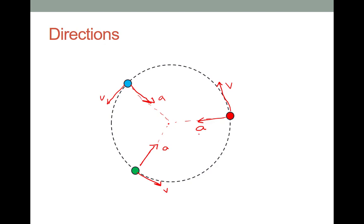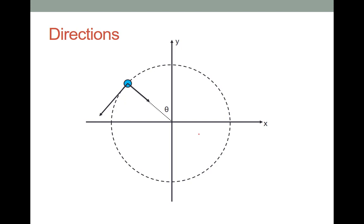If we focus on the blue object, we can define the angle that it's rotated through. Here I've defined it relative to the positive y-axis. I can then drop a coordinate system over at the blue object, and I see that the acceleration makes the angle theta with respect to the negative y-axis. This would allow me to write my acceleration at any point in terms of x and y components.